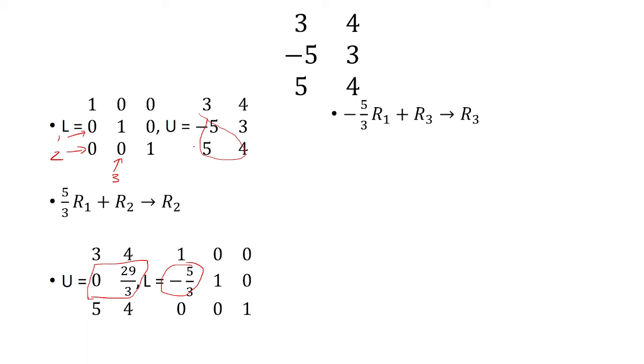Now we want to cancel out the 5 here, because I want this to be 0. So what we do is take negative 5 thirds row 1, add it to row 3. So what did we do? We multiplied by negative 5 thirds. So you take the opposite of negative 5 thirds, which is positive 5 thirds. And because we're working on row 3, we're going to go over here and plug in 5 thirds.